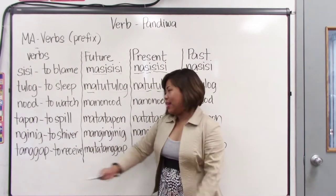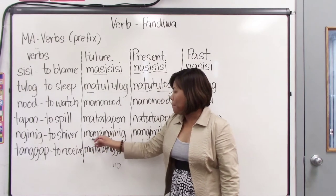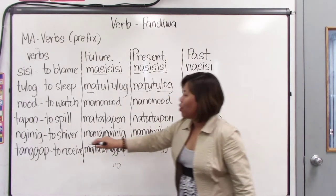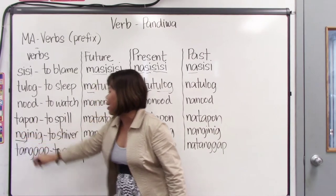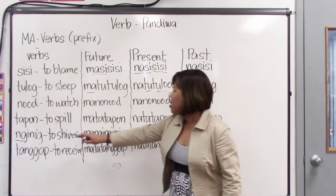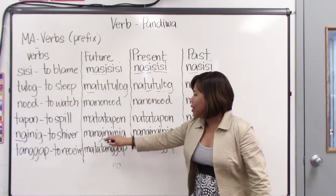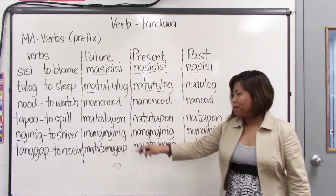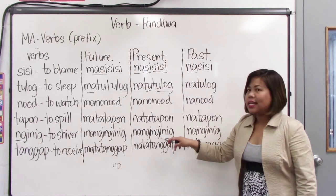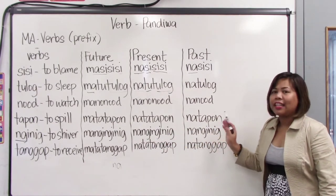Nginig means to shiver. So: ma-ngi-nginig. The first syllable is ngi — N-G-I — so we repeat it here: ma-ngi-nginig. Present: nanginig. Past: nanginig.